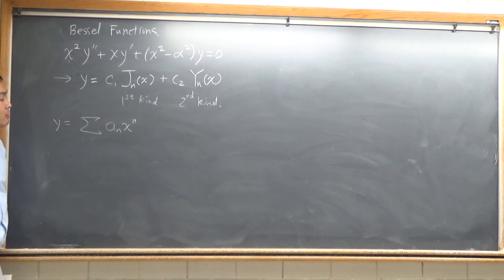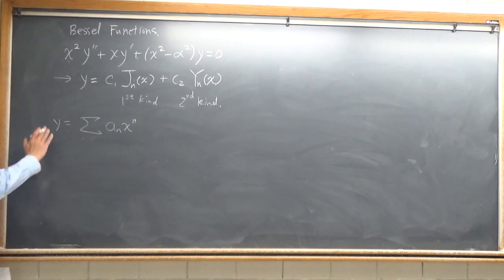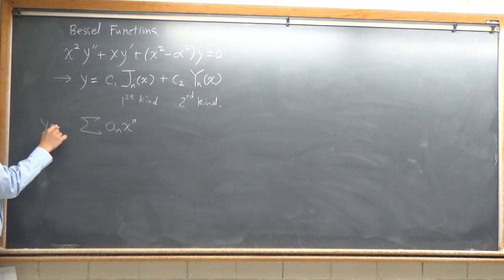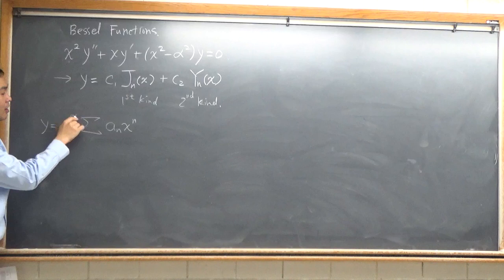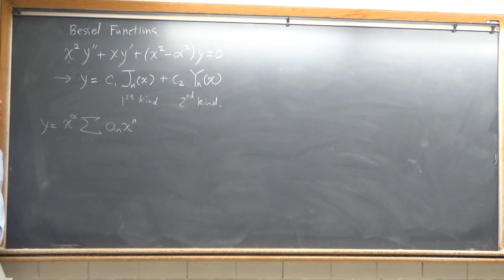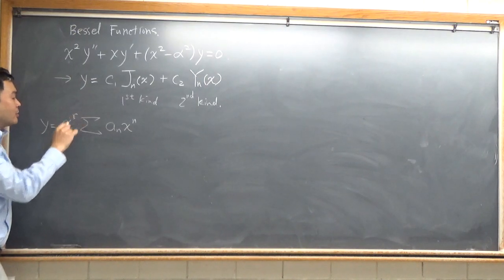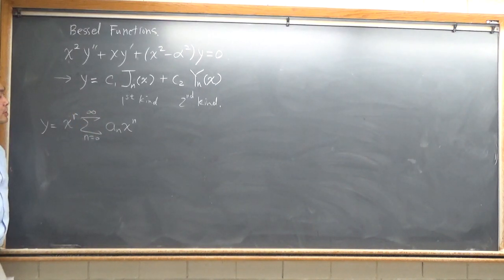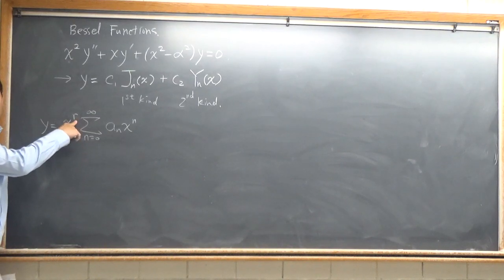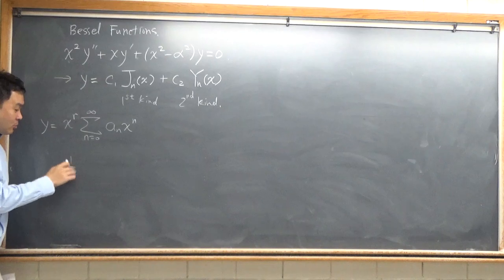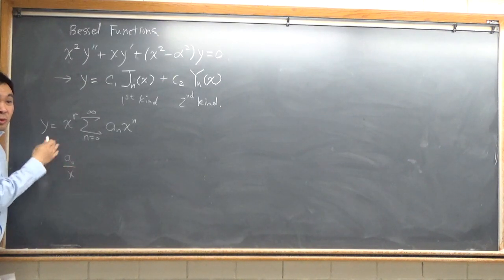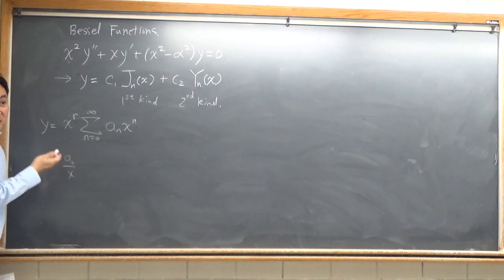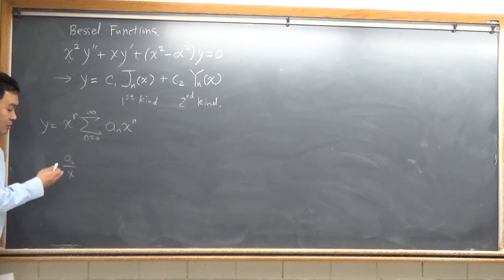Instead, you need a slightly different approach called the Frobenius method. The Frobenius method modifies this by saying the solution might have an extra x to the r factor, summed from zero to infinity. Having this x to the r allows your solutions to have singularities. For example, if r is negative one, the first term starts from something like 1 over x, giving an undefined value at zero. Those are called Laurent series — series that have negative powers.